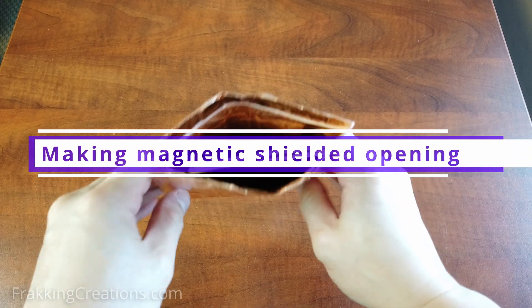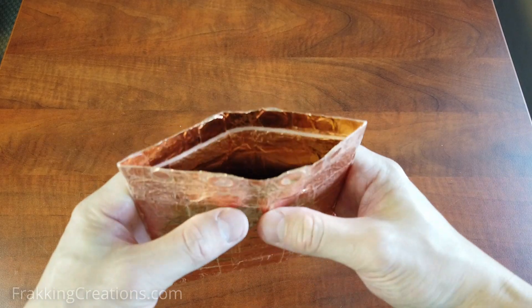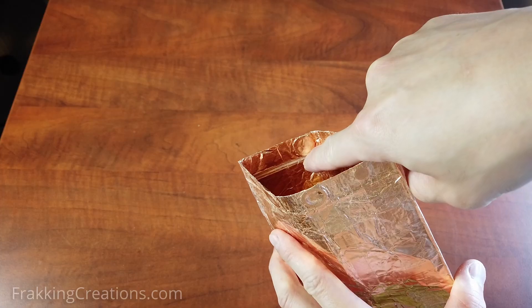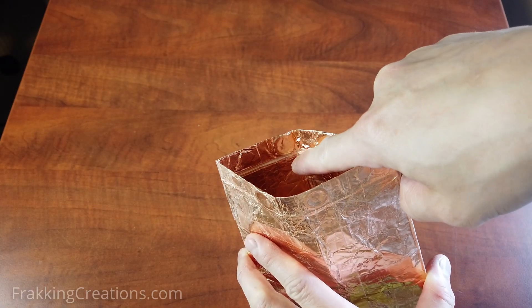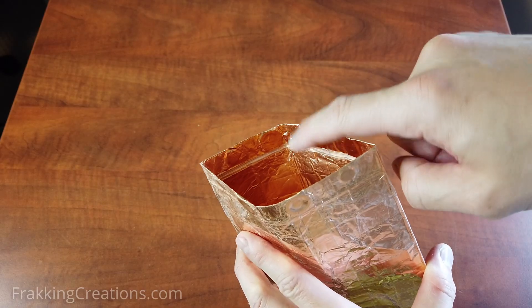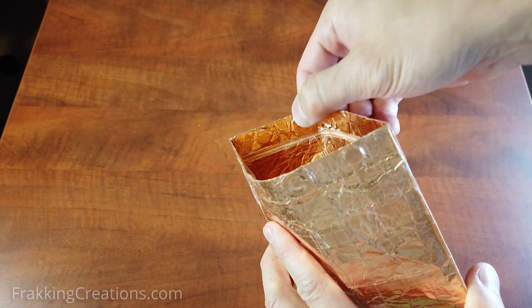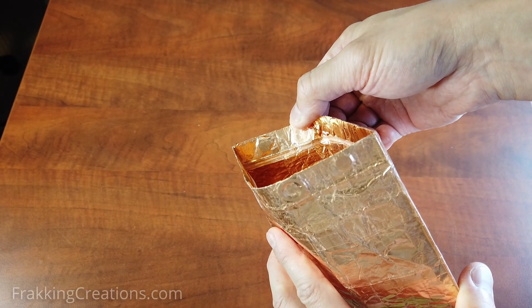This RF shielded opening will help seal the opening from RF signals leaking in or out. To do this, we're going to wrap vertical layers of tape around the opening lip so that when closed, the two sides of the lip touch and form an RF barrier. The inserted magnets will help ensure both sides are in contact when the lip is closed.